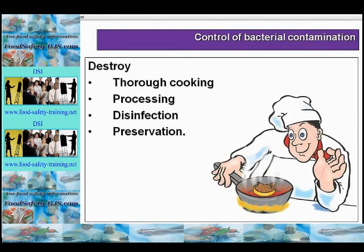The last control of bacterial contamination is by destroying bacteria — via thorough cooking to 75°C core temperature, by processing such as pasteurisation, sterilisation, UHT or canning, by disinfection, and by preservation.